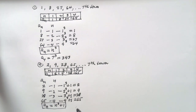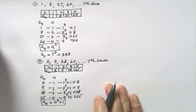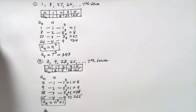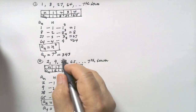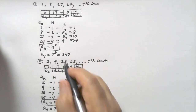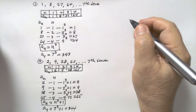Now we are going to use this formula to obtain the seventh term. A sub 7 equals 7 cubed plus 1. We already know 7 cubed is 343, so we just add 1 to get 344.